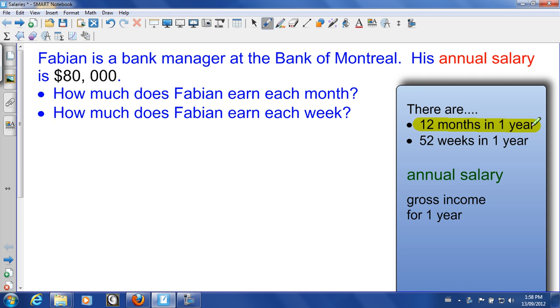So to answer the question how much does Fabian earn each month, we simply need to take the annual salary. The annual salary is the gross income for one year and we need to divide that up evenly by the 12 months that there are in one year.